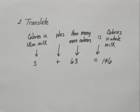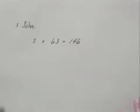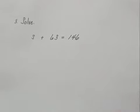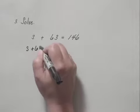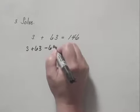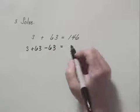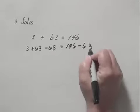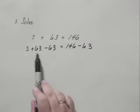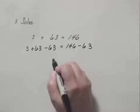We move to our third step, which is to solve the problem. We solve S plus 63 equals 146. To solve this, we subtract 63 on both sides of the equation. So: S plus 63 minus 63 equals 146 minus 63. S plus 63 minus 63 is S, giving us S equals 83.